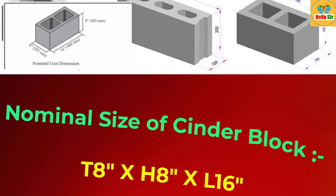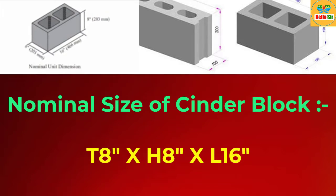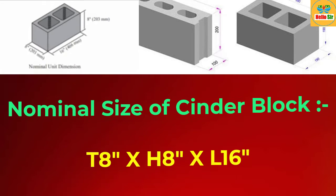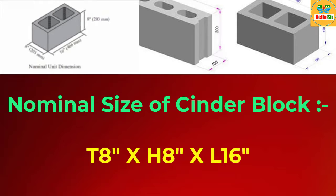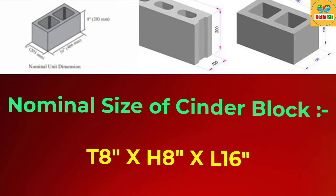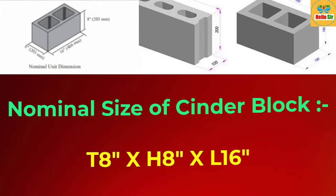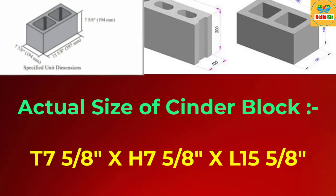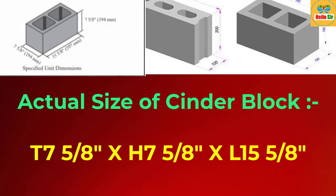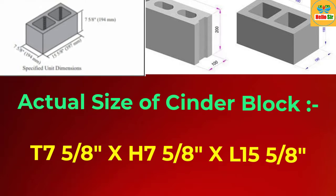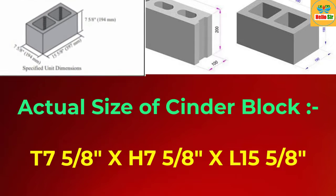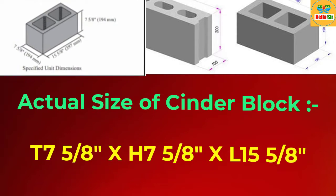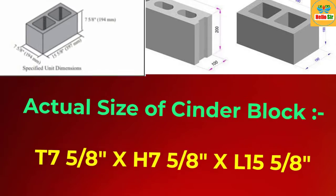Typically, cinder blocks have nominal dimensions of 8 inches by 16 inches, available in normal thicknesses of 4 inch, 6 inch, 8 inch, 10 inch, 12 inch, 14 inch, and 16 inches. As a US standard, the most commonly used nominal size of cinder block is 8-inch long by 8-inch high by 8-inch wide. Their actual size measures 3/8 inch shorter, allowing for the mortar joint.